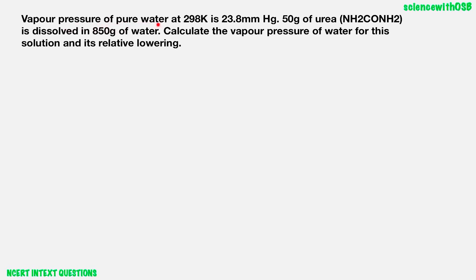Vapour pressure of pure water at 298 Kelvin is 23.8 mmHg. 50 grams of urea is dissolved in 850 grams of water. Calculate the vapour pressure of water for this solution and its relative lowering of vapour pressure.